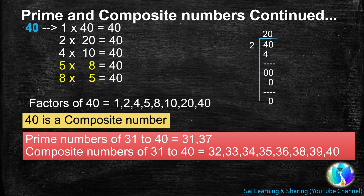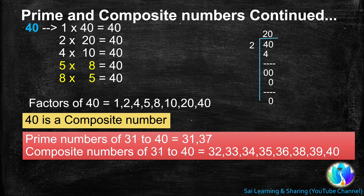Okay. Now, prime numbers from 31 to 40 are 31 and 37. Composite numbers from 31 to 40 are 32, 33, 34, 35, 36, 38, 39, and 40.